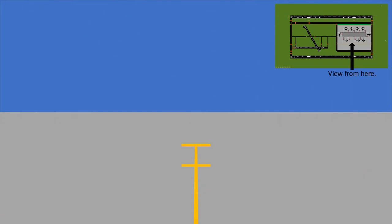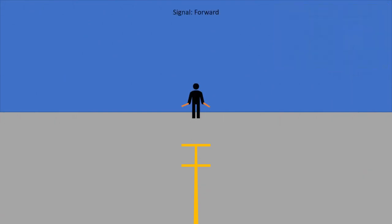Next we'll look at ground marshalling signals. Keep in mind these are simplified — there are many more signals than what we'll cover. These are basically the ones that apply to all aircraft, since some signals are aircraft-specific. The ground marshaller is a real person that stands on the apron in front of the plane and uses hand signals to guide the plane — to go left, right, wherever it needs to go.